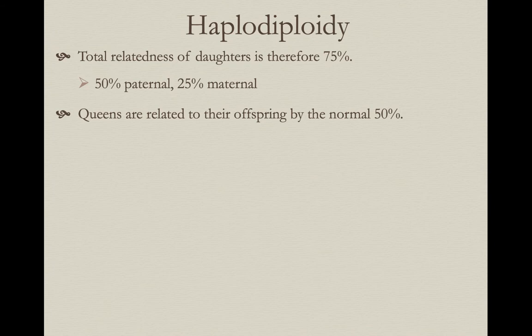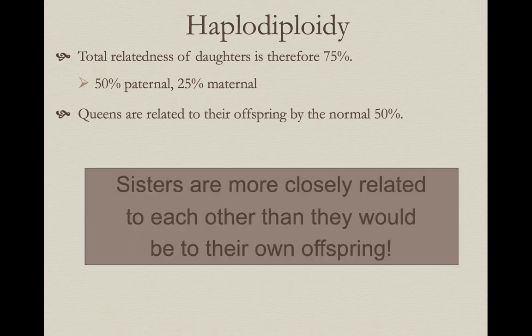The queens who are actually doing the reproduction — laying the eggs that produce daughters — are only related to their offspring by the typical 50%; they're passing on 50% of their DNA in each egg. This leads to the bizarre consequence that sisters are more closely related to each other than they would be to their own offspring. They can't reproduce or pass on their DNA directly, but they have a great opportunity to gain through the indirect route of fitness — helping a close relative increase their reproductive success.